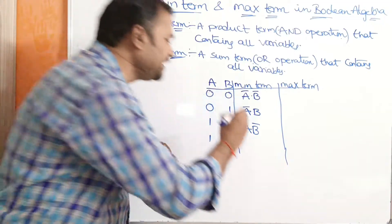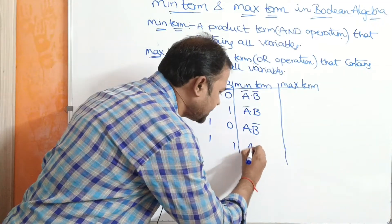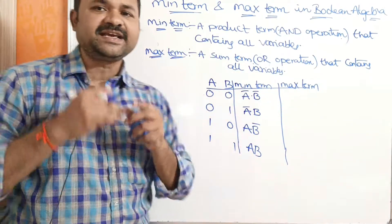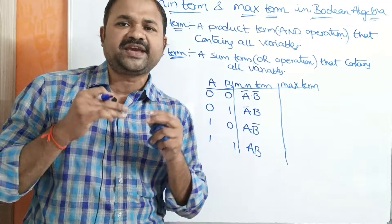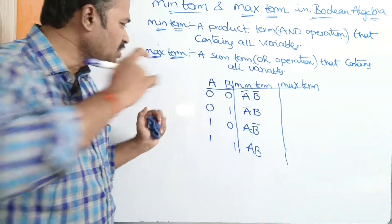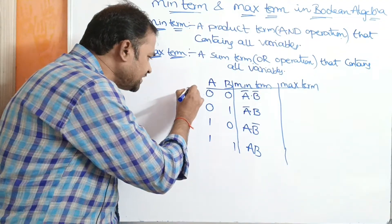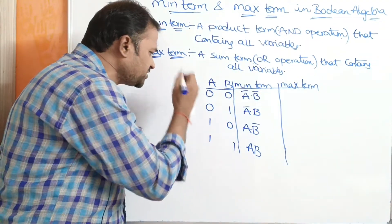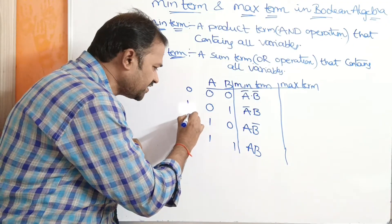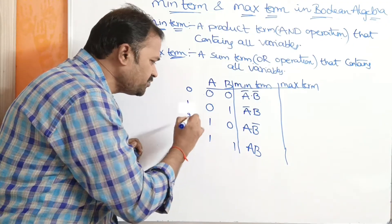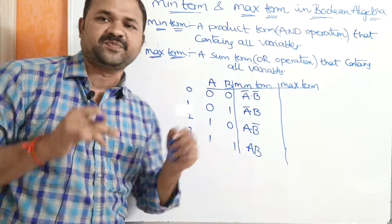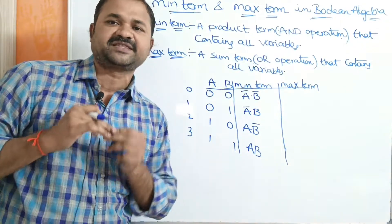Next, 1,1 means this can be written as A·B. Now let us see how we can represent minterms. Here 0,0 means decimal number 0; 0,1 means decimal number 1; 1,0 means decimal number 2; and 1,1 means decimal number 3.